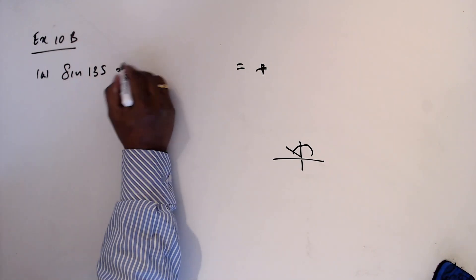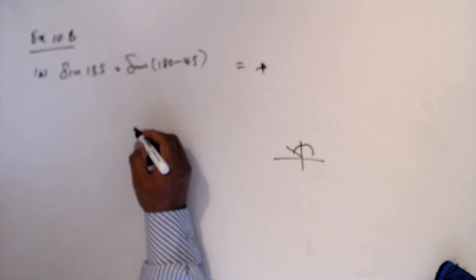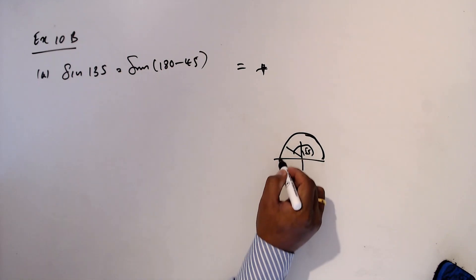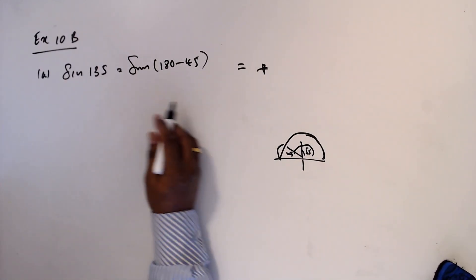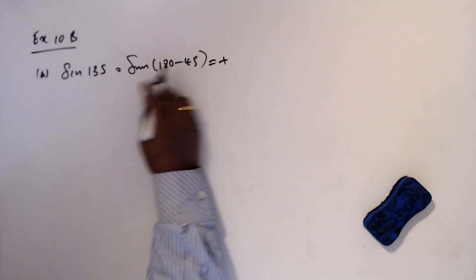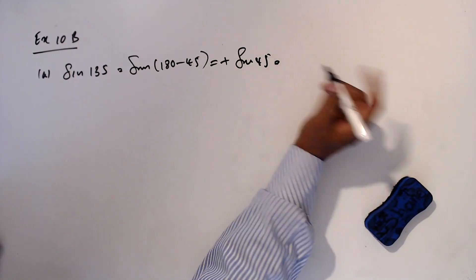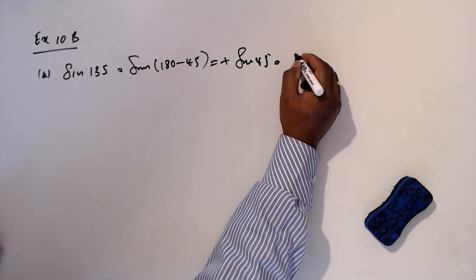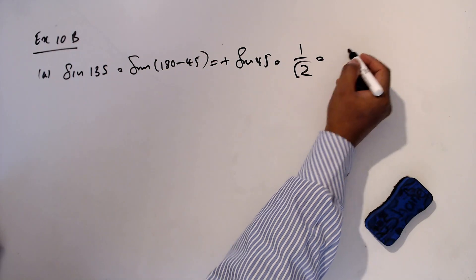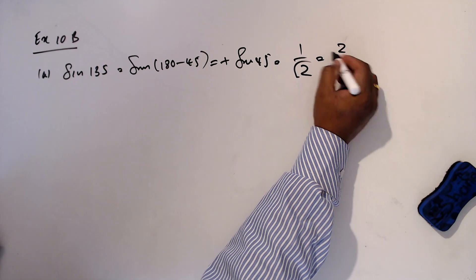I will write sine 135 as sine(180 minus 45), which equals sine 45. Sine 45 from the table is 1 over square root 2. If you rationalize this, it becomes square root 2 over 2.